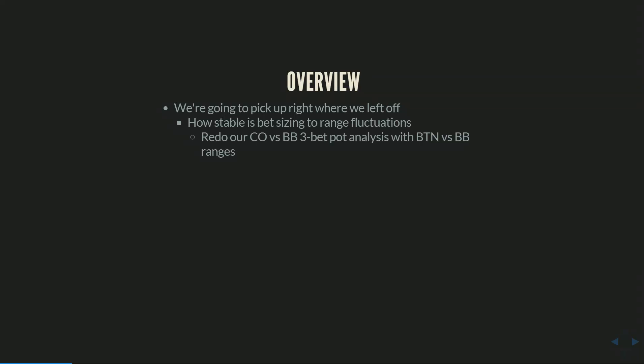What I want to look at in this situation is: does the best single bet size change? We'll do the same kind of EV aggregation that we did before. Does the board categorization from part one change — where we use a large size on certain boards, a small size on certain boards, and a medium size on the rest? Do the same rules about which boards to use which size on still hold? Are there new categorization rules we need to add? It seems likely that with much wider ranges we'd see some categorization changes, especially on boards where the new hands in the wider ranges interact — lower boards and middle card boards with more draws are likely to be affected by our ranges expanding.